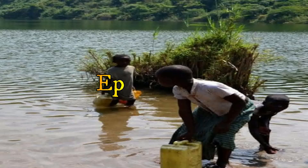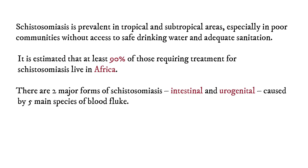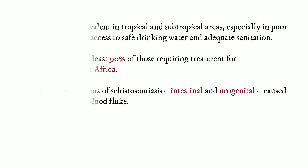Moving on to the epidemiology. Schistosomiasis is prevalent in tropical and subtropical areas, especially in poor communities without access to safe drinking water and adequate sanitation. It is estimated that at least 90% of those requiring treatment for schistosomiasis live in Africa. There are two major forms: intestinal and urogenital, both caused by five main species of blood flukes.